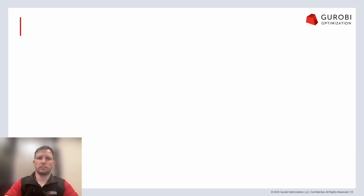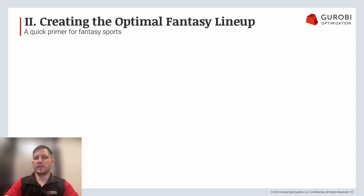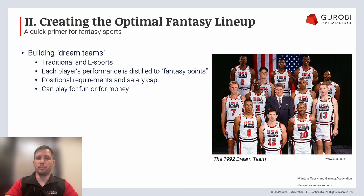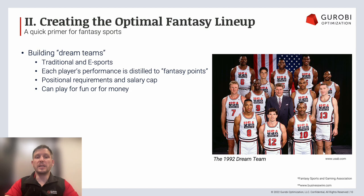Thanks, Rahul, for that super interesting example of how to use mathematical optimization to build unique recommendation systems. I'm going to switch topics and talk about building optimal lineups in fantasy sports. Fantasy sports are online competitions where you build dream teams of real-life players across a set of real-life games. Traditionally, sports like football, basketball, and baseball have had a huge fantasy community. Other sports like soccer and hockey are definitely getting there, and even e-sports like League of Legends or Call of Duty have fantasy competitions.